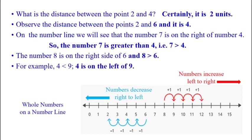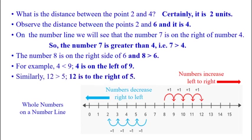For example, 4 is less than 9, so 4 is on the left of 9. Similarly, 12 is greater than 5, so 12 is to the right of 5. This is the number line — towards the right the numbers are increasing, and towards the left the numbers are decreasing.